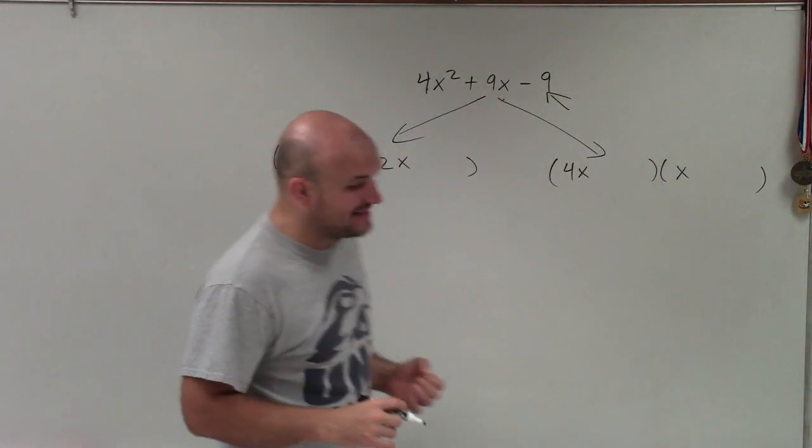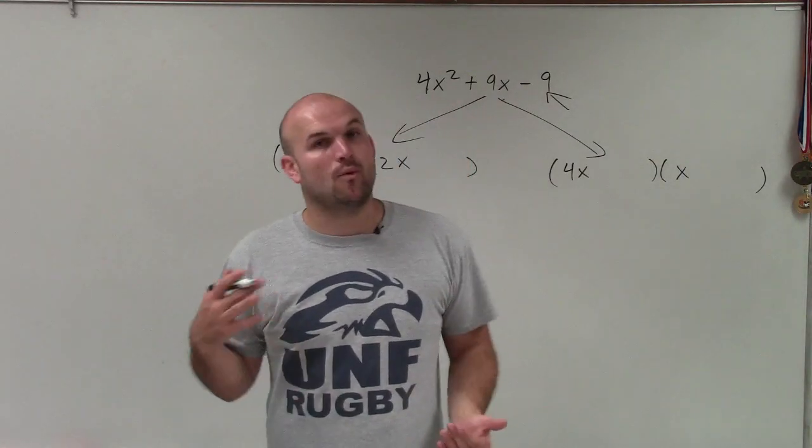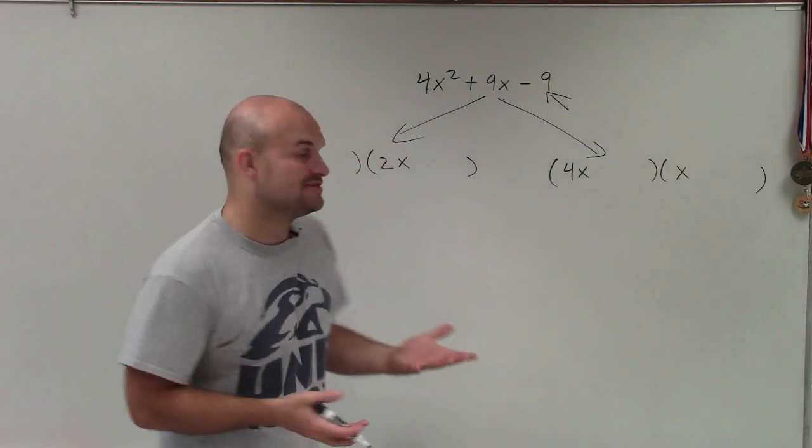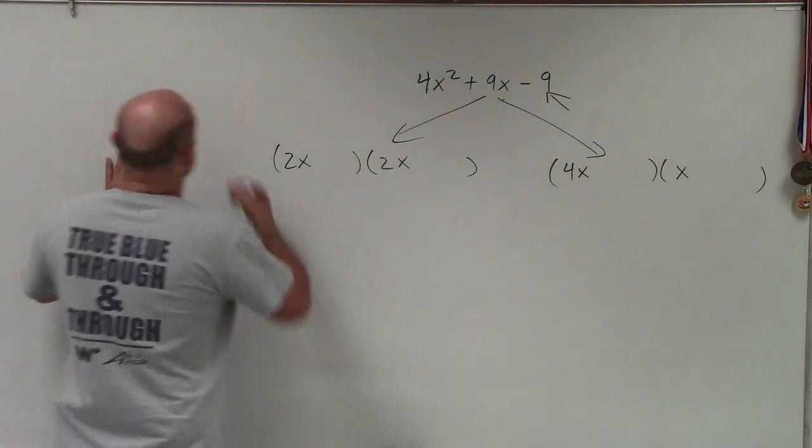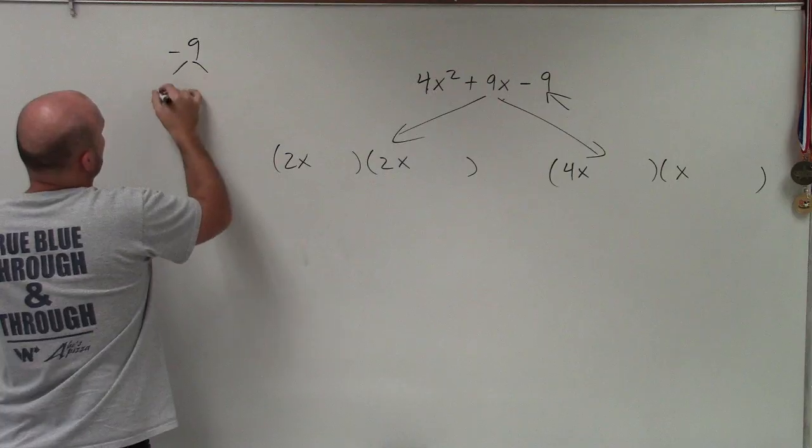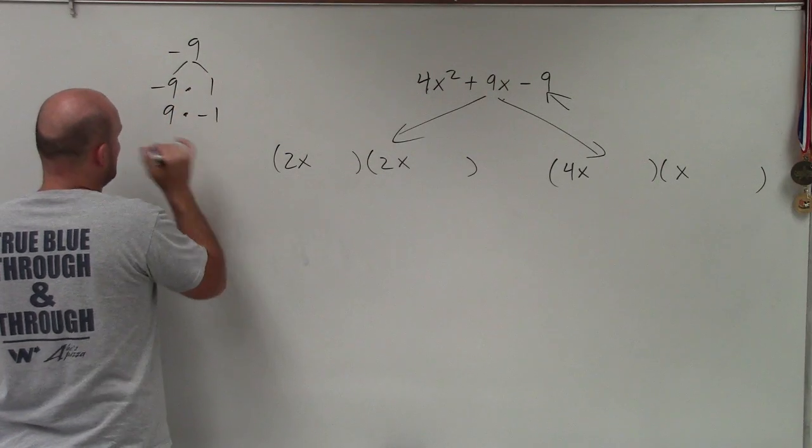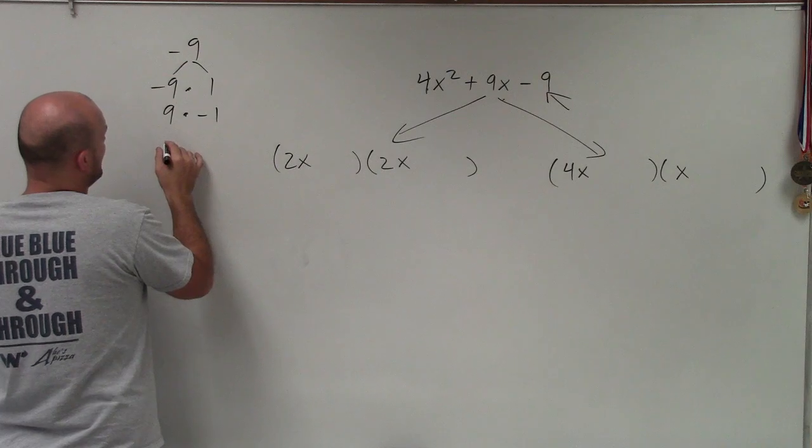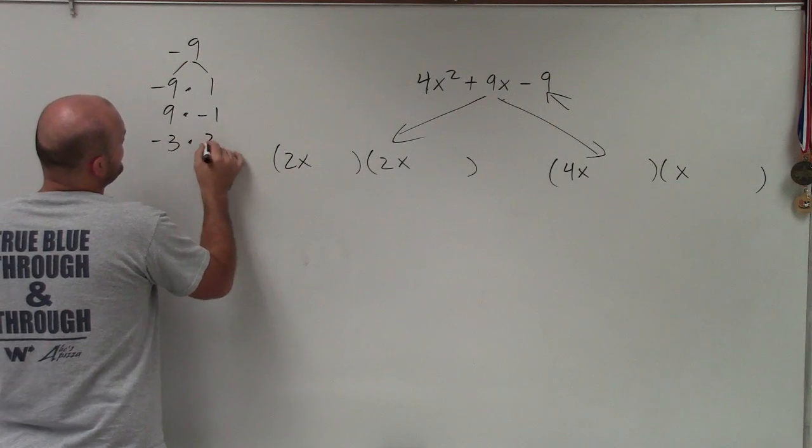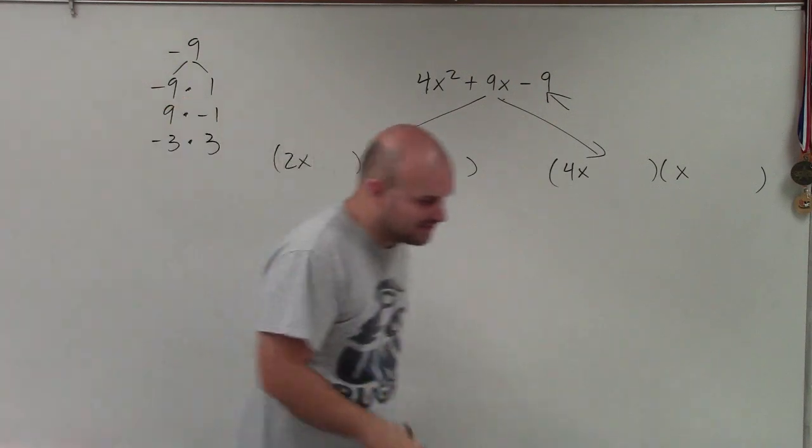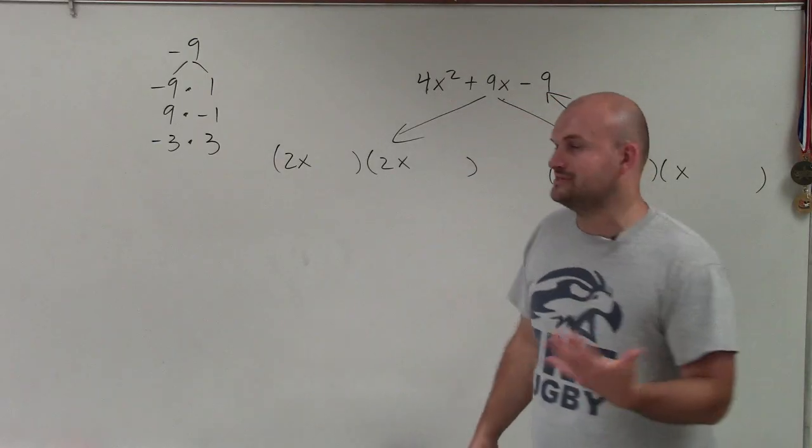So remember, if they're multiplying to give me negative 9, one factor has to be positive, one has to be negative. Let's write down the factors of negative 9. I could do negative 9 times 1, positive 9 times negative 1, or negative 3 times 3. It doesn't really matter which one's negative because they're the same number.